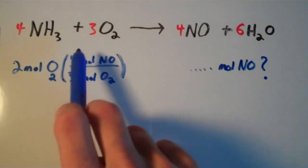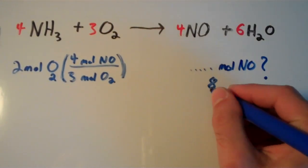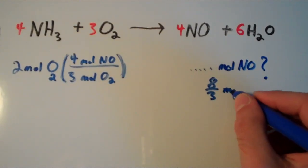So if we get 2 times 4, that's 8 divided by 3, we would get 8 thirds moles of NO.